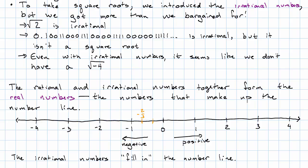And it turns out that the irrational numbers, in a sense, fill in the number line. We have, for example, square root of 2, which lives somewhere around here. And square root of 3 lives somewhere closer to there.